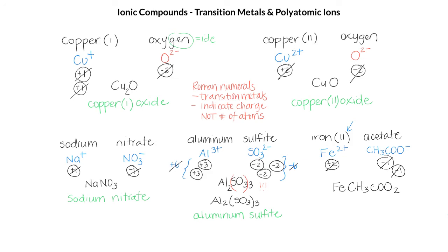So let's write our formula FeCH₃COO₂. But is that the correct formula for iron 2 acetate? It's not, because the 2 as written tells us that we have 2 oxygen atoms, but we want 2 acetate ions. So remember we need parentheses, and we get the correct formula Fe(CH₃COO)₂ for iron 2 acetate.